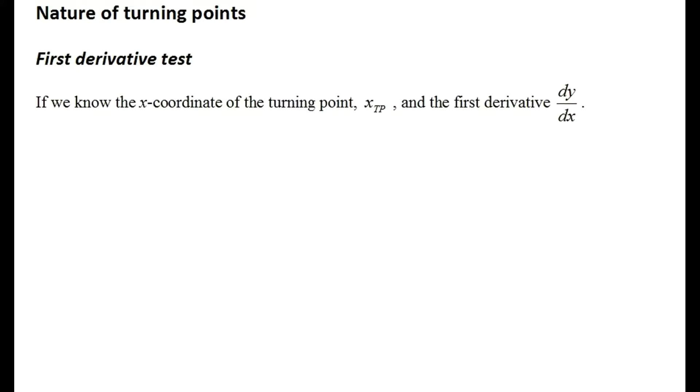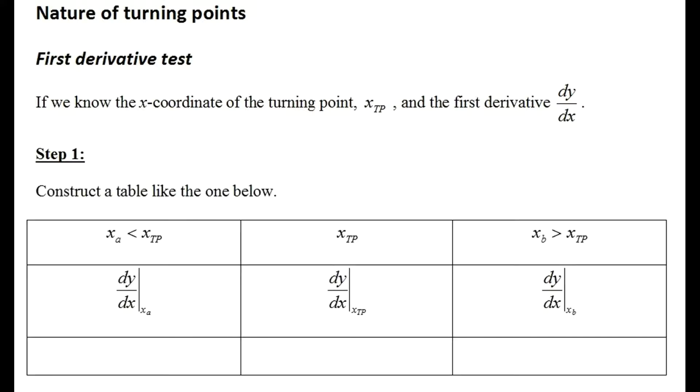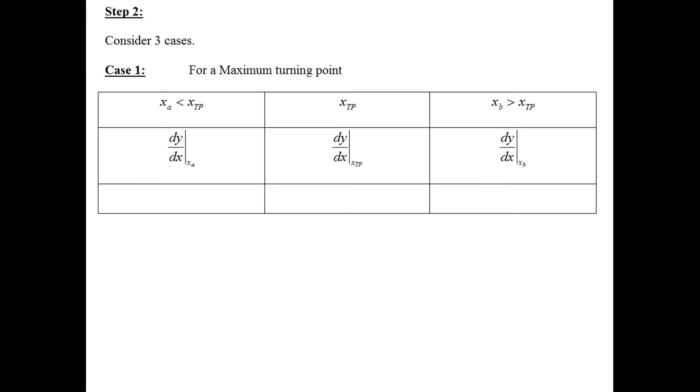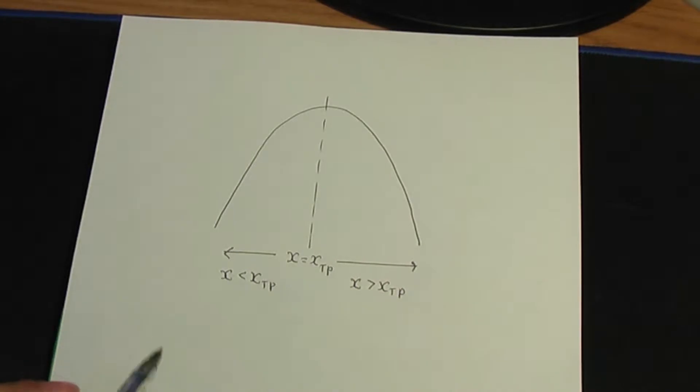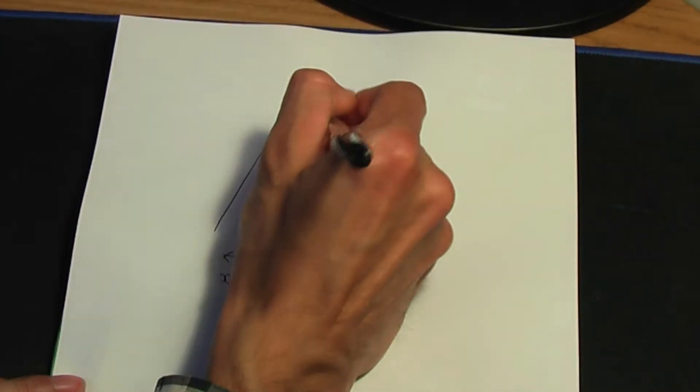Talking about further tests — let me explain what this involves. If we know the x-coordinate of the turning point (xtp), and we know the first derivative, the first step is to construct a table. We have three cases to consider. For a maximum turning point, let me show you how this table works using a diagram.